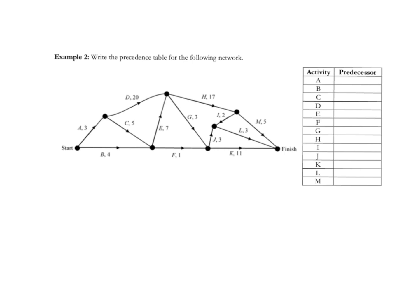Now we need to complete the table. Activity A is at the start so nothing happened before it — same with activity B. Looking at activity C, whatever led into the highlighted vertex gives us the predecessor: A. So A is a predecessor of C. For D, what led into D? A, so that's A as well. For E, what came into E? B and C — often written in alphabetical order.